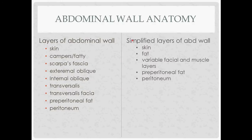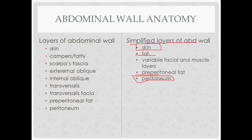Starting with abdominal wall anatomy, one of the most important things to remember is just the layers. The simplified layers are: skin and peritoneum as the two outermost layers. Inside of that, you have fat underneath the skin, preperitoneal fat above the peritoneum, and inside the fat a sandwich of variable layers of fascia and muscles.